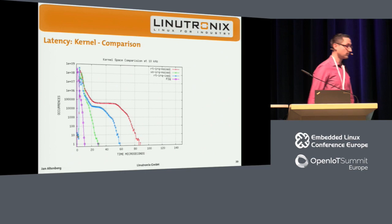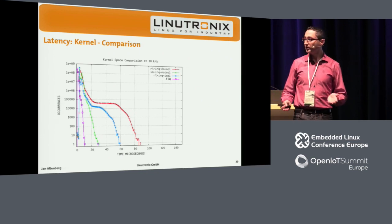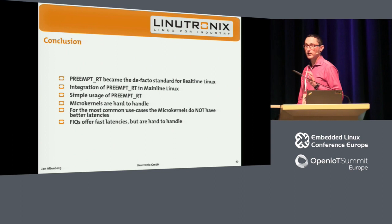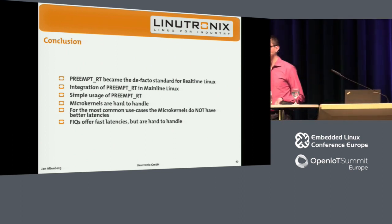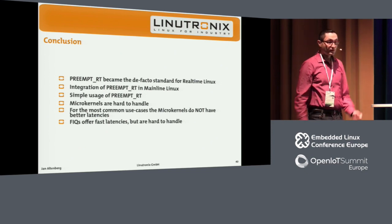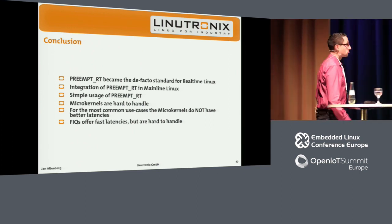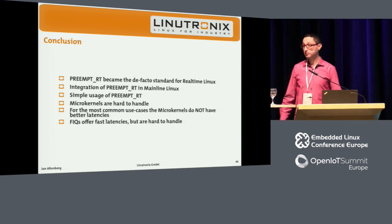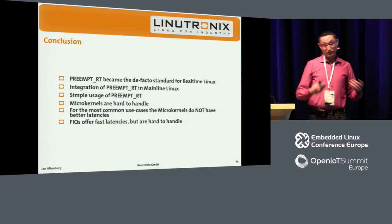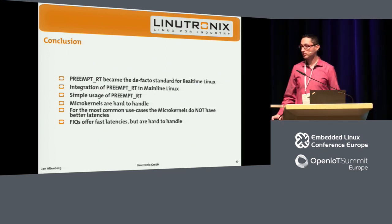Taking into account that we're comparing a full-featured operating system with a micro-kernel, these numbers are not too bad. The conclusion: with the PreemptRT patch, we have a single-kernel approach that is nowadays the de facto standard for Linux and is being integrated into mainline. It's simple to use, you can use standard C library, nothing special, and it's available for every second kernel version. For most use cases, micro-kernels don't offer better latencies — they're really comparable. My recommendation: PreemptRT is the way to go.